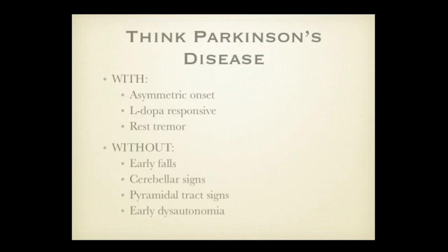A rule of thumb: you'll be right most of the time if you remember these few rules. If they have an asymmetric onset, they're DOPA-responsive, they have a rest tremor, and they don't have early falls or atypical features such as cerebellar signs, long-tract signs, or early dysautonomia — they very likely have Parkinson's disease. You're going to be right about 90% of the time in predicting the pathology.